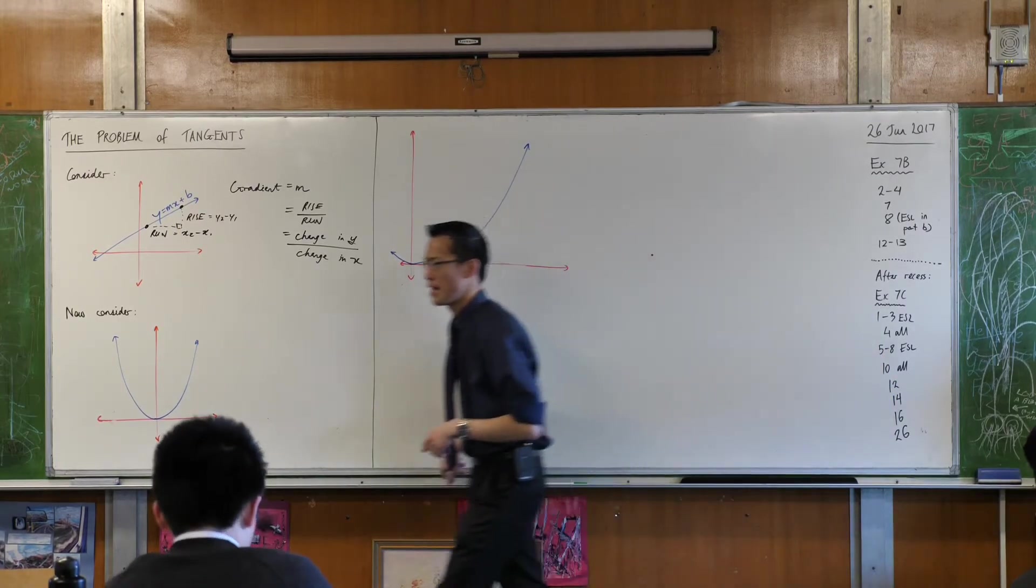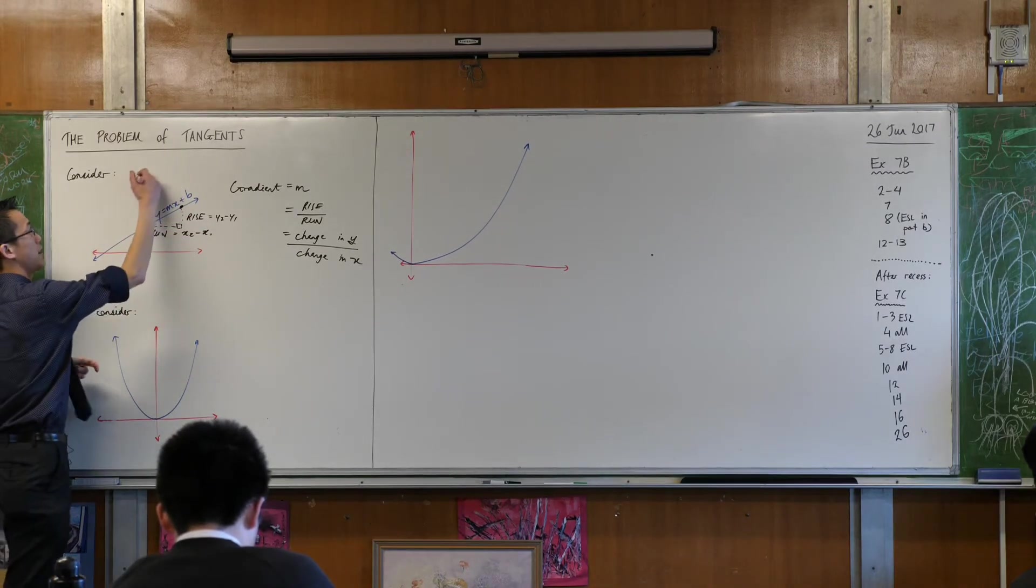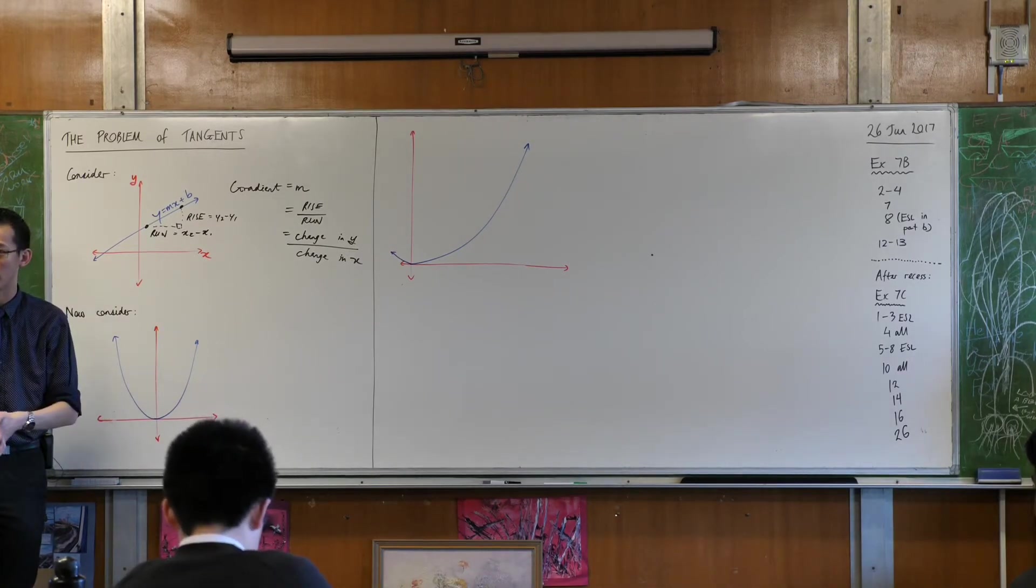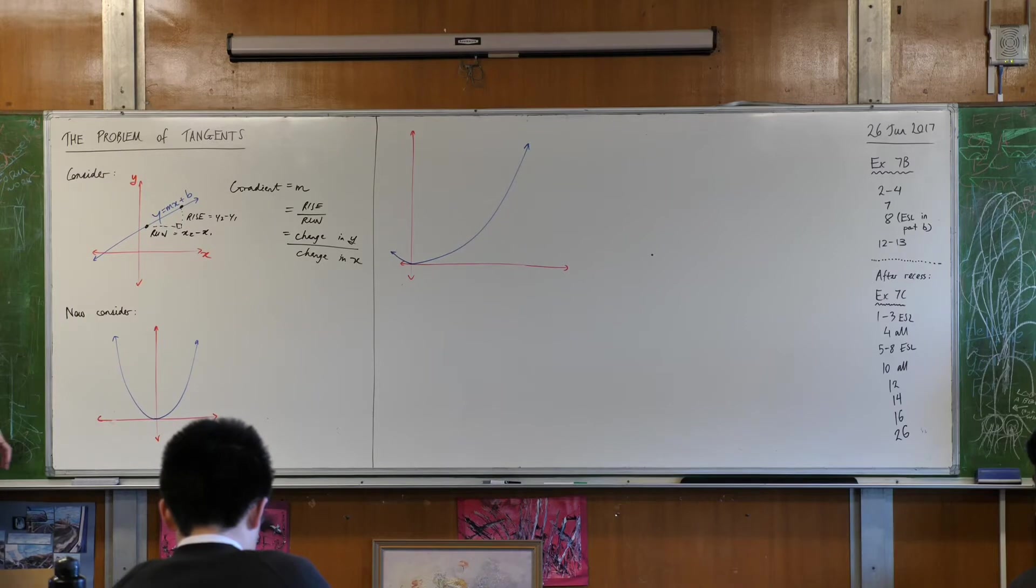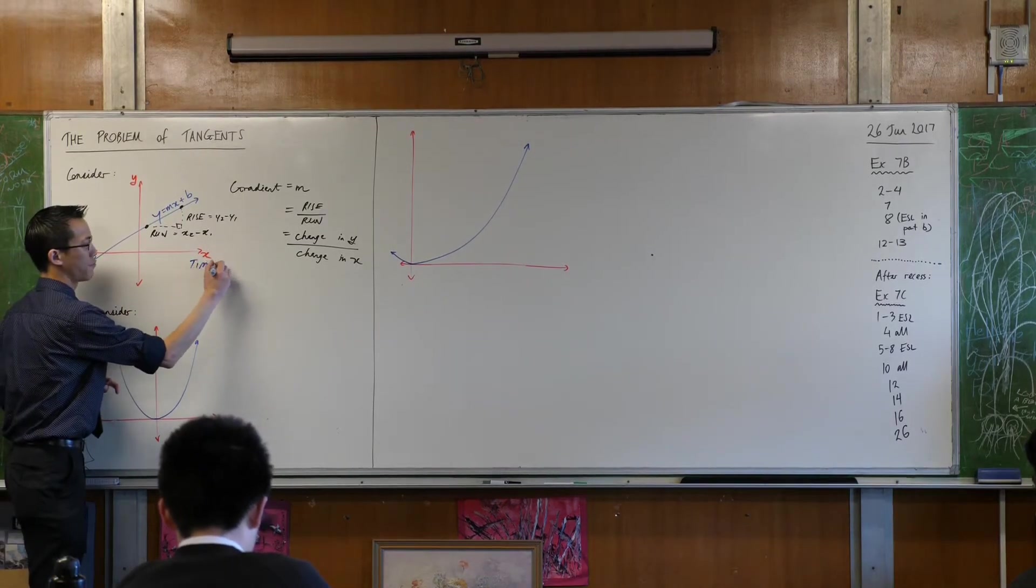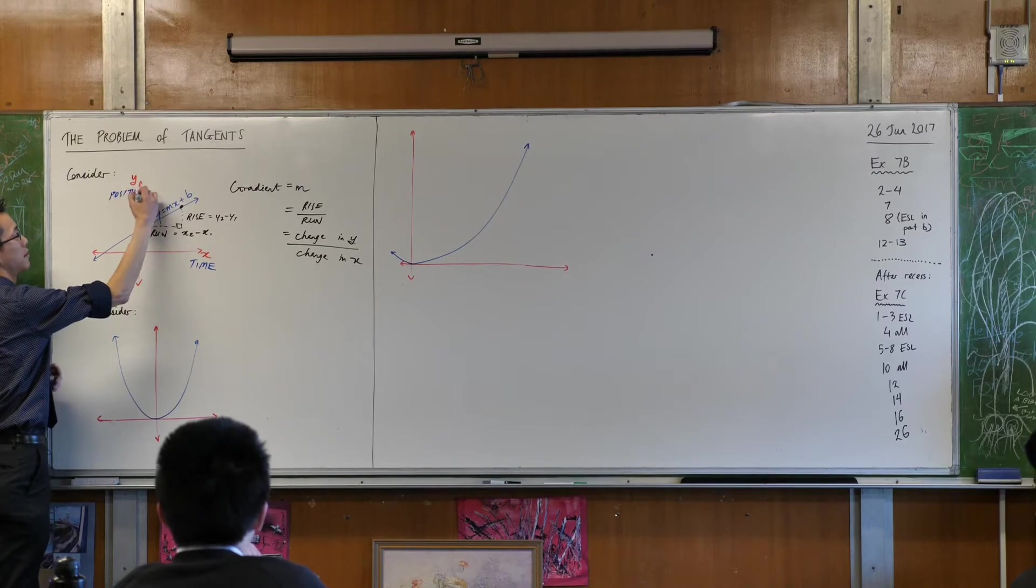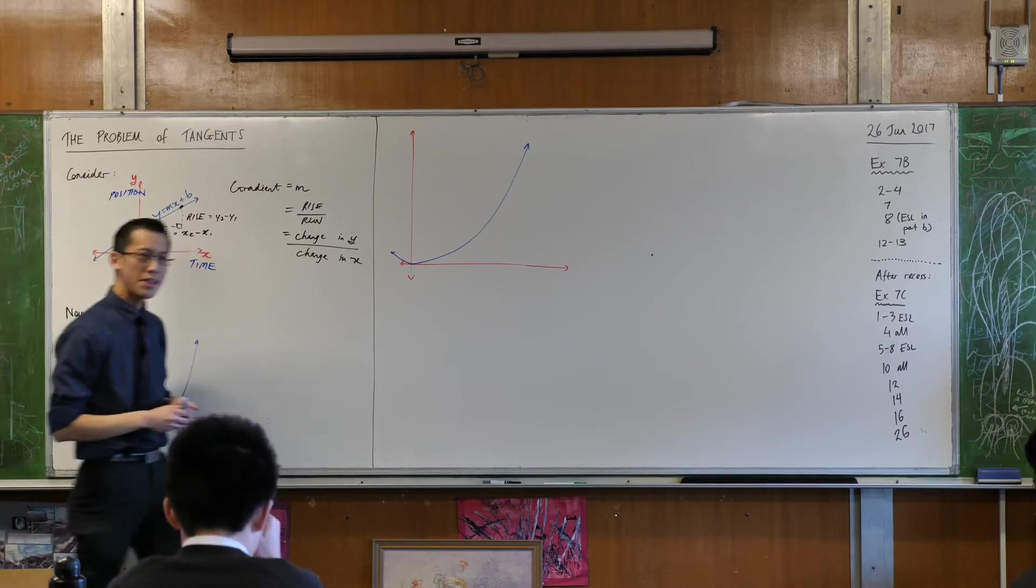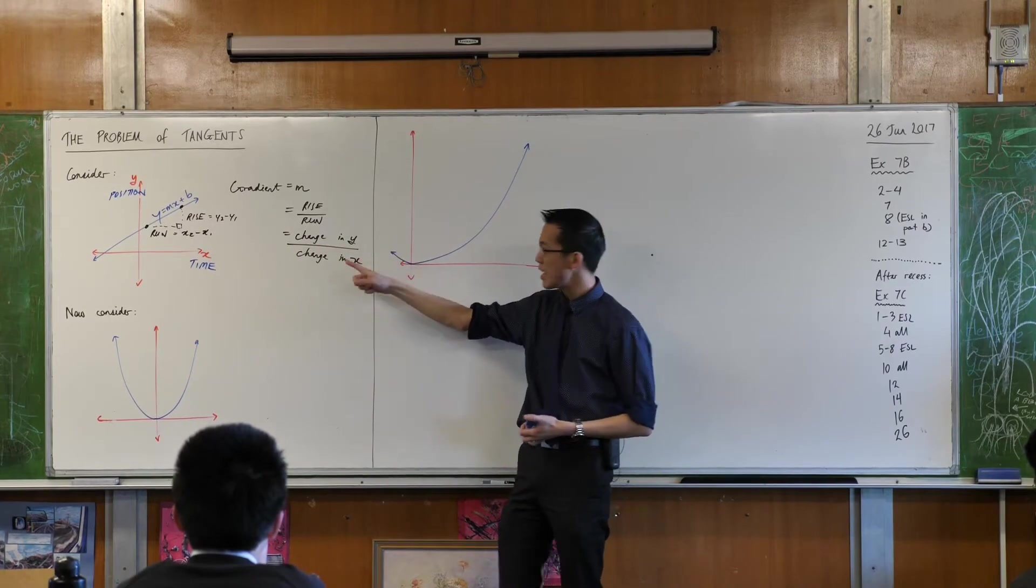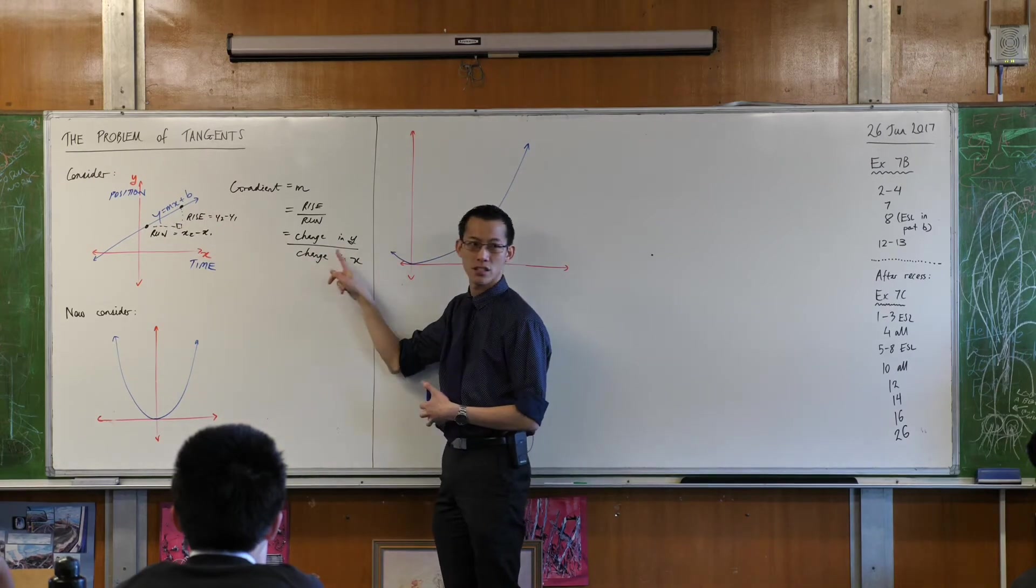At the moment, I've labeled my axes, or I've sort of implied that my axes are an x and a y-axis. But these axes can refer to anything. For example, if I said this horizontal axis was something like, say, time, and this vertical axis was something like, say, position, then the change in y compared to the change in x would be the same as the change in position compared to the change in time.